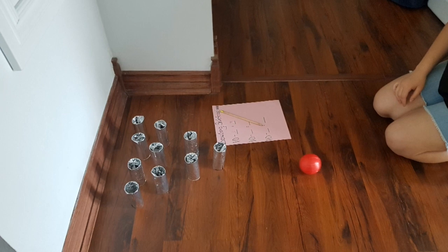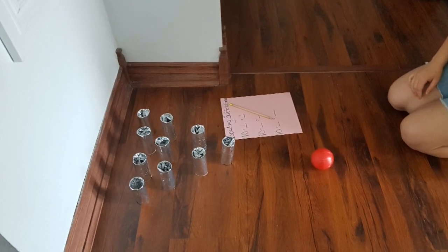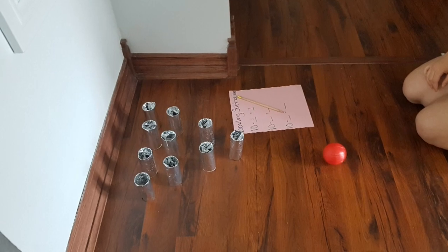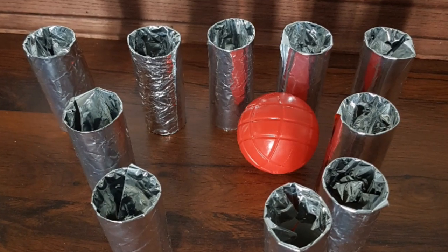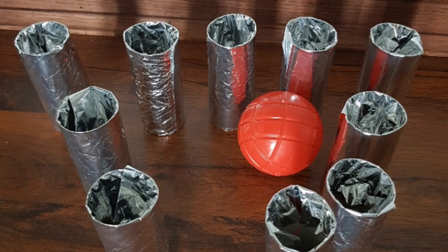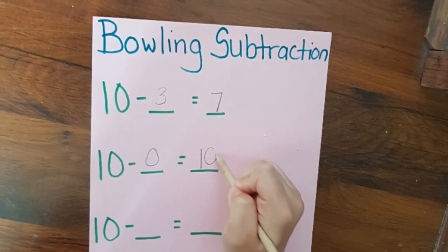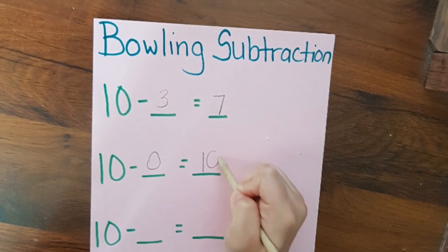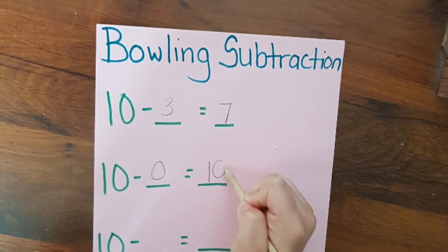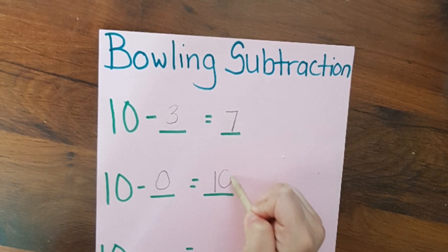When you complete your first round, reset your pins and roll the ball again. This time around I didn't knock down any pins. What will my subtraction sentence be? Our subtraction sentence would be ten take away zero equals ten, because all our pins remained standing.